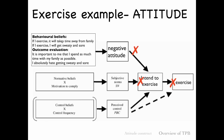For example, I might think that if I exercise, it will take time away from my family, and my evaluation is that spending lots of time with family is really important. So I'm likely to have a negative attitude and won't intend to exercise. Another common example: under behavioral beliefs, someone might think exercise will make them sweaty and sore, and they really hate that outcome. So again — negative attitude, negative intention, negative behavior.